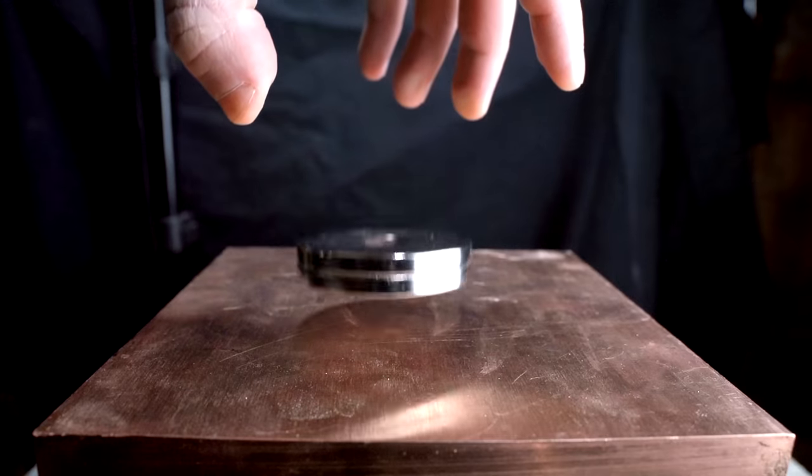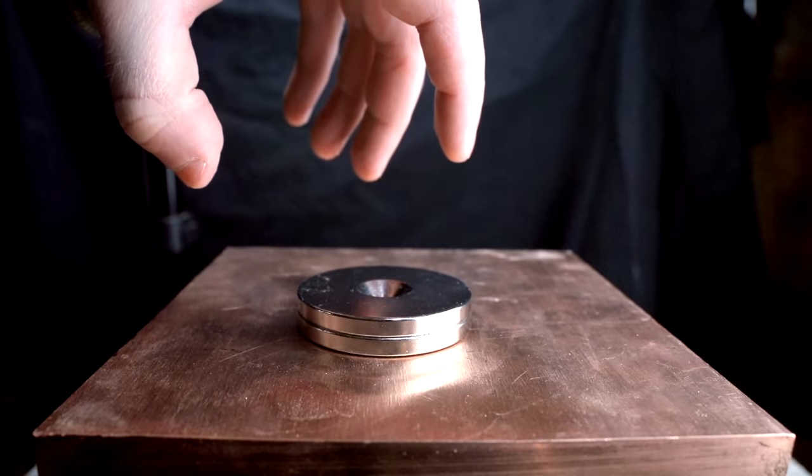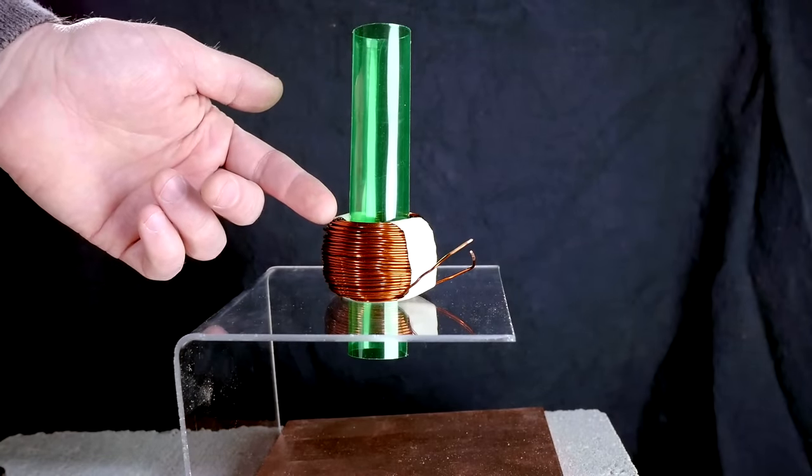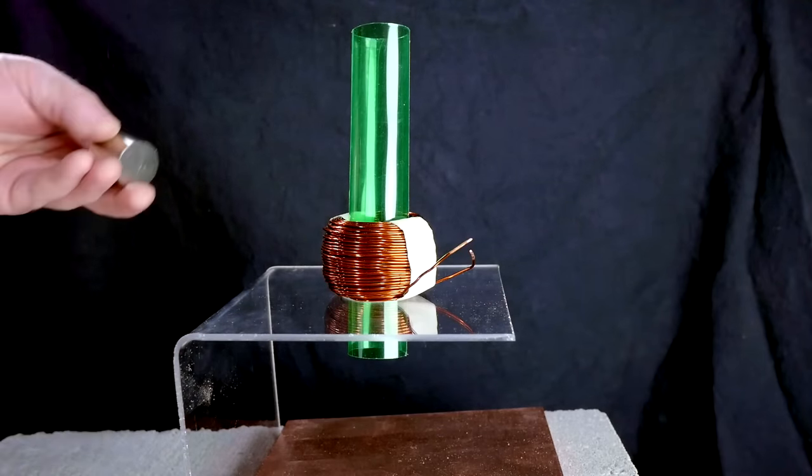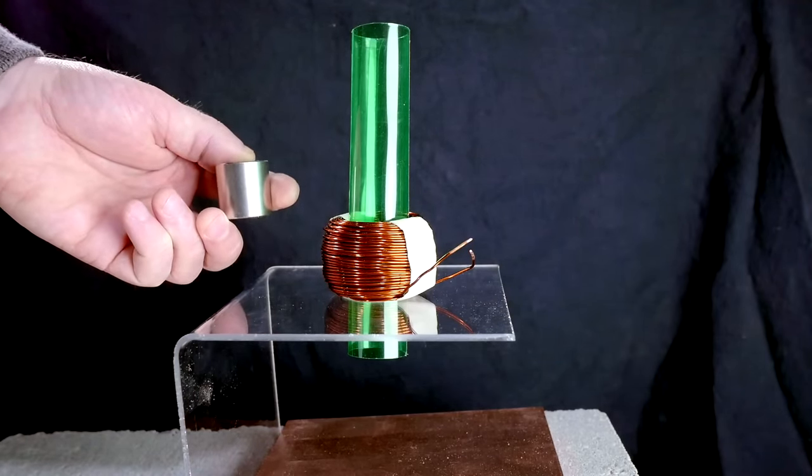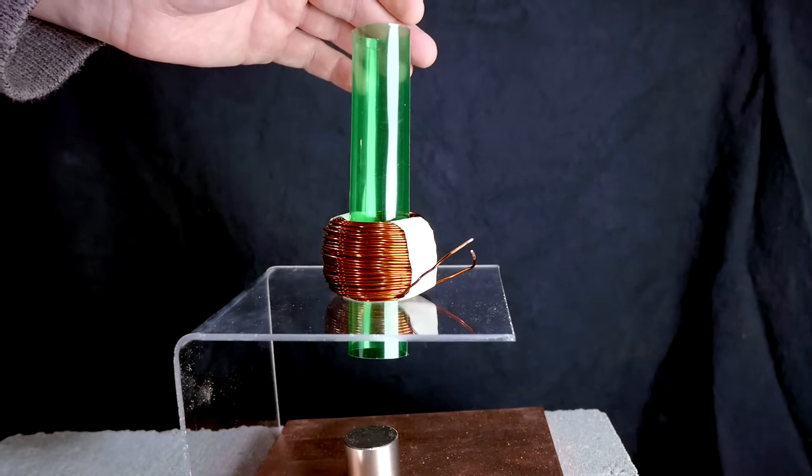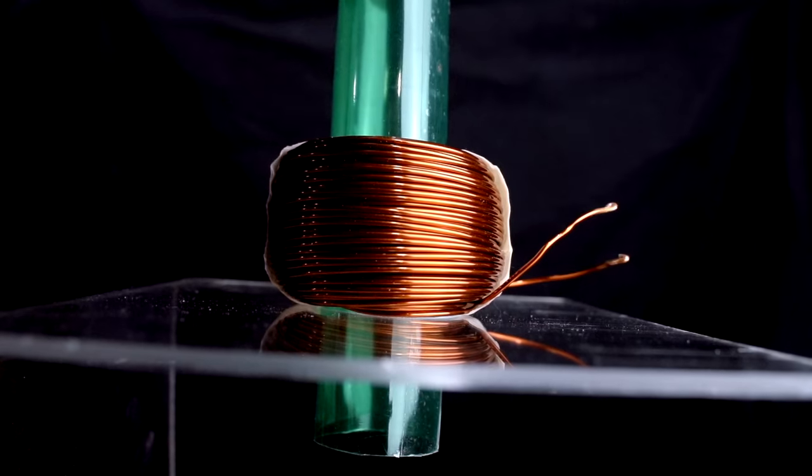One way that we can prove this resistance is due to the flow of electricity is by replacing the copper plates with a copper coil. This coil of wire is not connected at the ends, and so it does not form a complete electrical circuit. If we tried to make electrons flow around this coil, they would have nowhere to go, and we can tell this is the case because when I drop a magnet through the center, there is no resistance. It falls through the coil as if it were not even there, no slowing down at all.